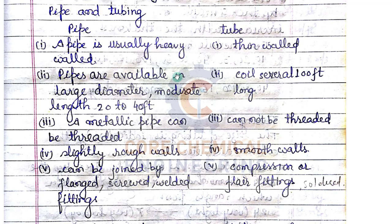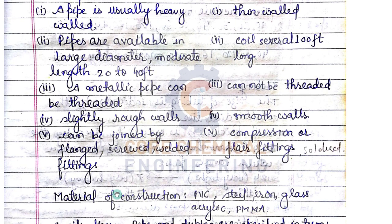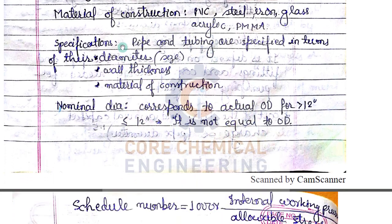Tubes are basically thin-walled and can be coiled up to 100 feet long. Tubes cannot be threaded, have smooth walls, and can be joined by compression or flare fittings. Materials of construction for pipes and tubing include PVC, steel, iron, glass, acrylic, or PMMA. Pipes and tubings are specified in terms of diameter, wall thickness, and material of construction.